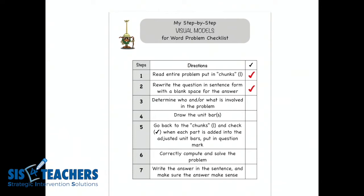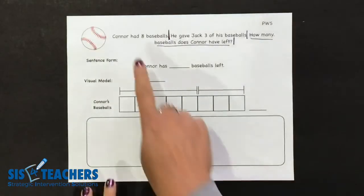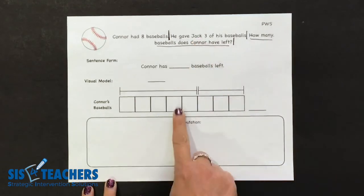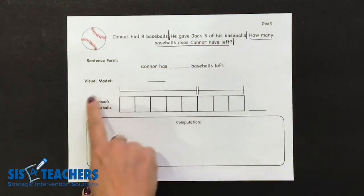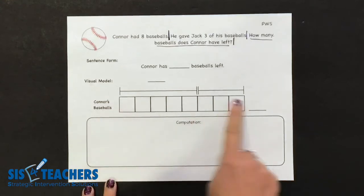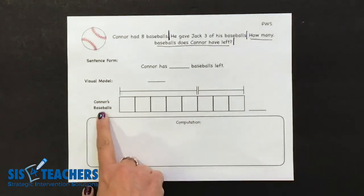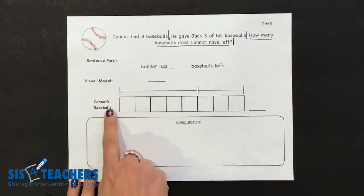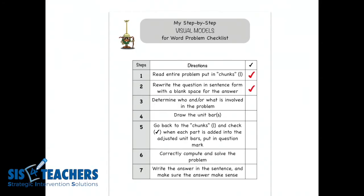Our next step says let's determine the who or the what involved in the problem. This is really talking about Connor's baseballs. Jack is involved in the problem, which we'll add in a little bit later, but the who or the what is going to go on the left of our unit bar that we're creating here. Throughout the school year we can leave this part off or put in 'baseballs' and have the child put in the who. Our journal is designed to help set students up for success, so we can go back to our checklist and confirm step three is taken care of.